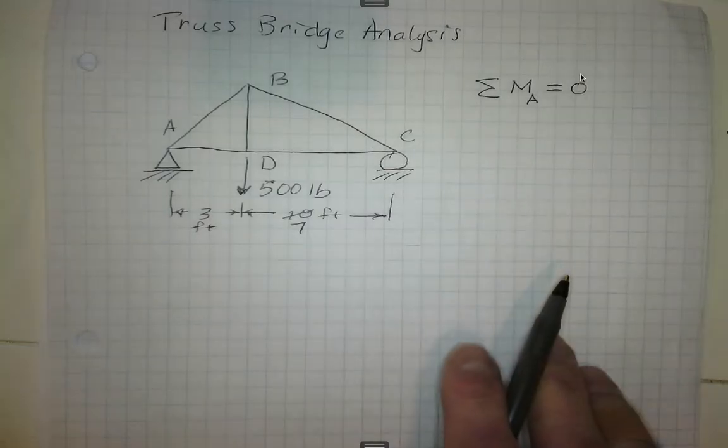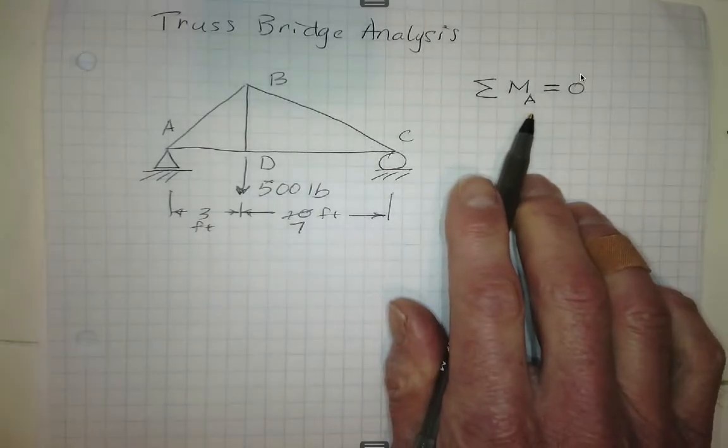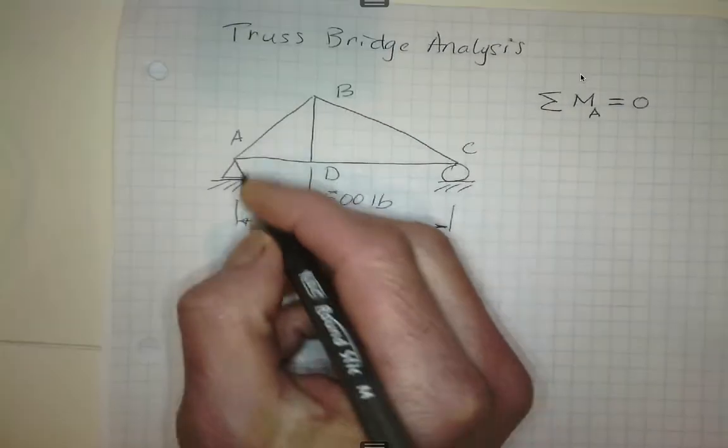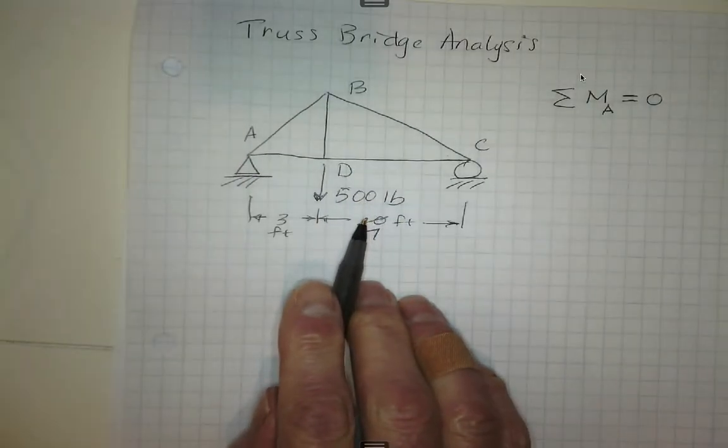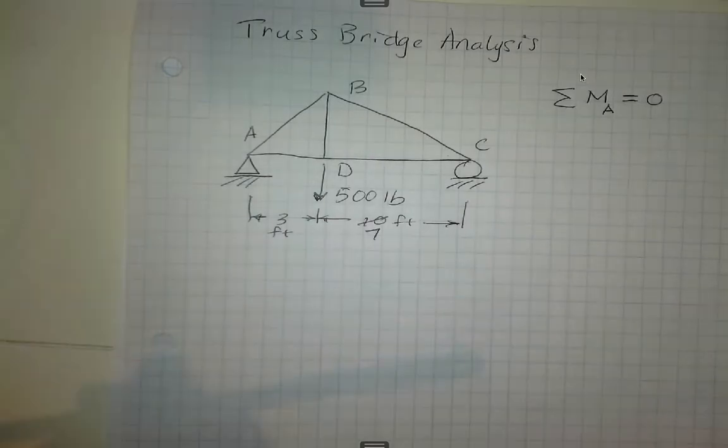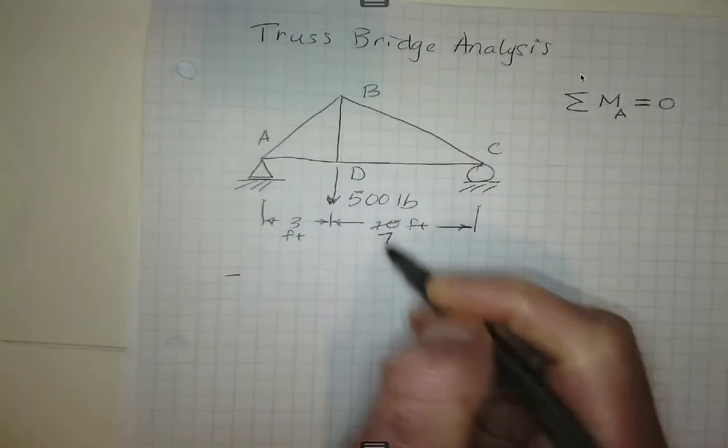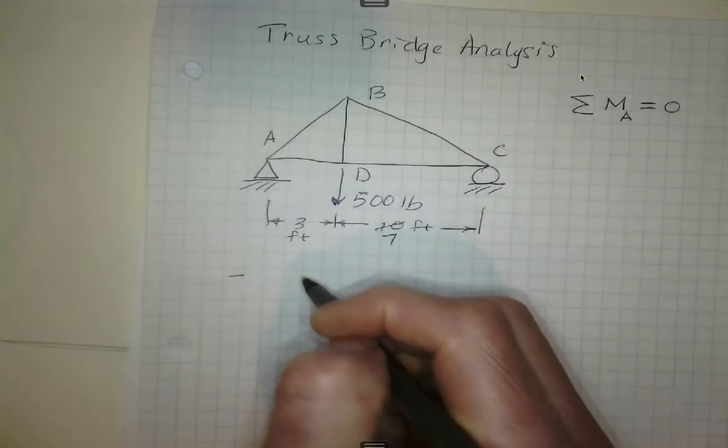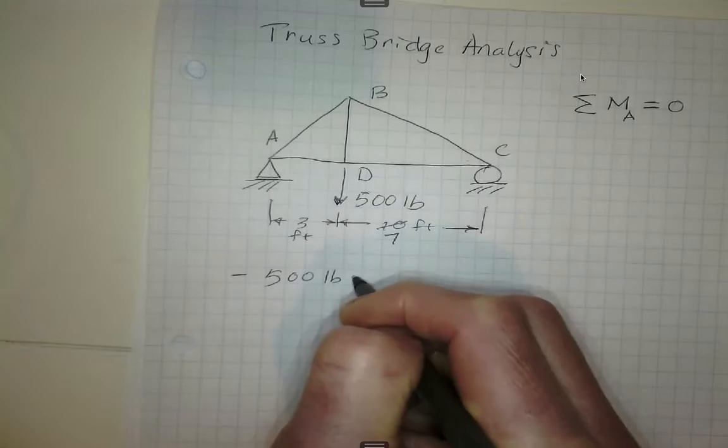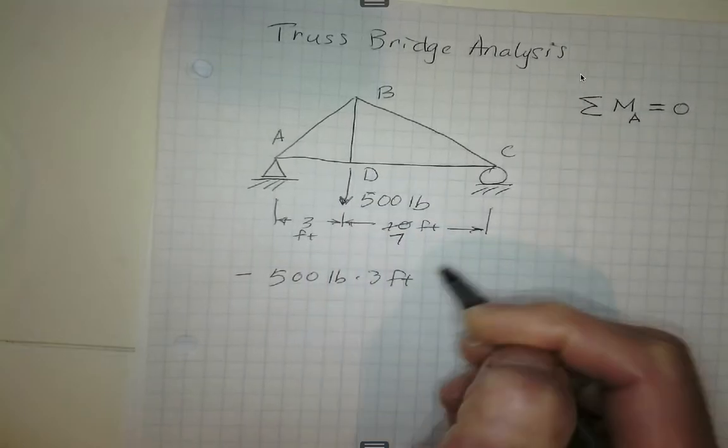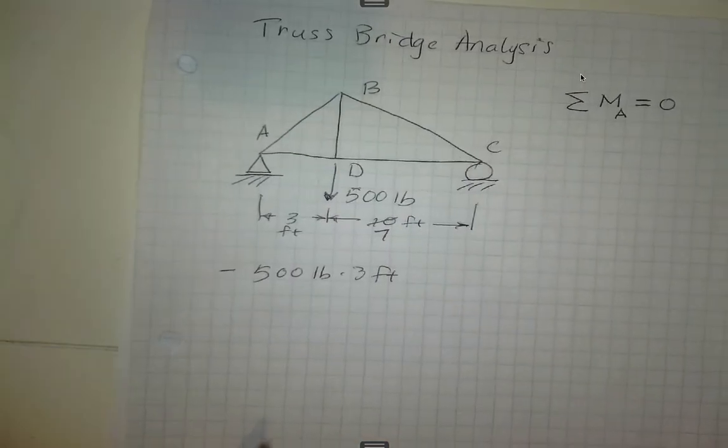Okay, so if we sum the moments around point A, we notice that there is a force down of 500 pounds, and that's going to cause clockwise rotation, and that's negative. That distance is 3 feet, so force times distance is 500 pounds times 3 feet. That's the moment in the clockwise direction, negative.